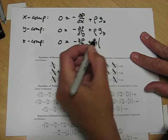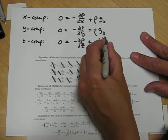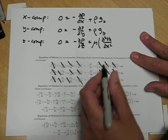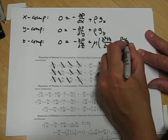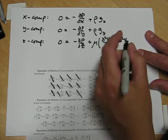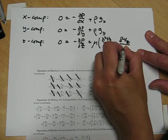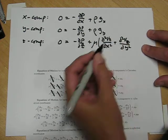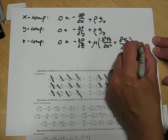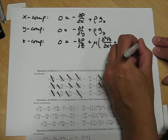oh, these has some terms, times the second derivative of vz with respect to x, second derivative of vz with respect to y, plus gz times rho.